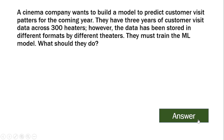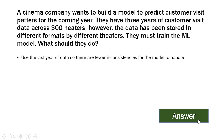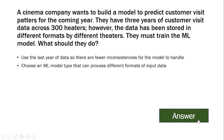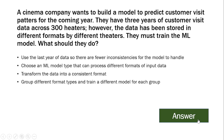A cinema company wants to build a model to predict customer visit patterns for the coming year. They have 3 years of customer visit data across 300 theaters. However, the data has been stored in different formats by different theaters. They must train the ML model. What should they do? The options are: use only the last year of data, choose an ML model type that can process different input formats, transform the data into a consistent format, or group different format types and train a different model for each group. The answer is: transform the data into a consistent format.